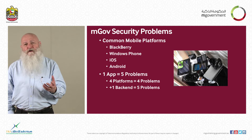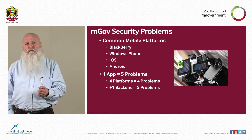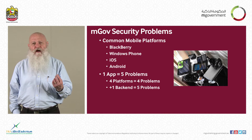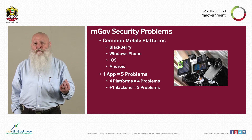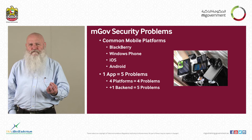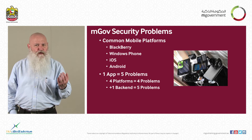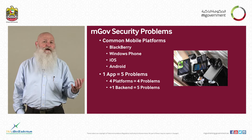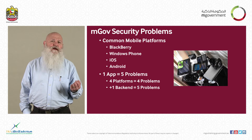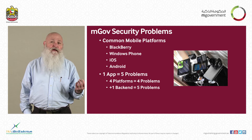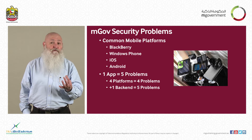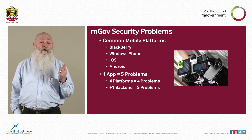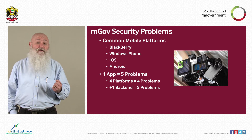When we talk about mobile security and mobile platforms for government, we're really talking about four platforms: the iOS or iPhone, the Android, the Blackberry, and the Windows Phone. But those four platforms transform into five areas of concern — each of them will be talking to a back-end database in your data center. So we have four mobile platforms plus a platform in the data center — five problem areas to consider.